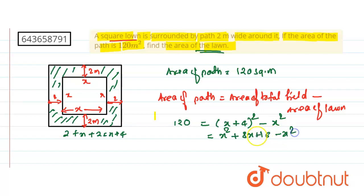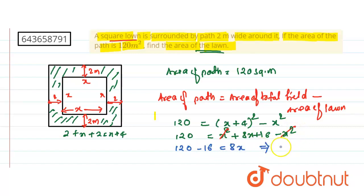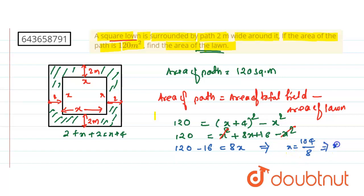Expanding: (x + 4)² = x² + 8x + 16. So 120 = x² + 8x + 16 − x². The x² terms cancel, giving 120 = 8x + 16. Therefore 8x = 120 − 16 = 104, so x = 104 ÷ 8.